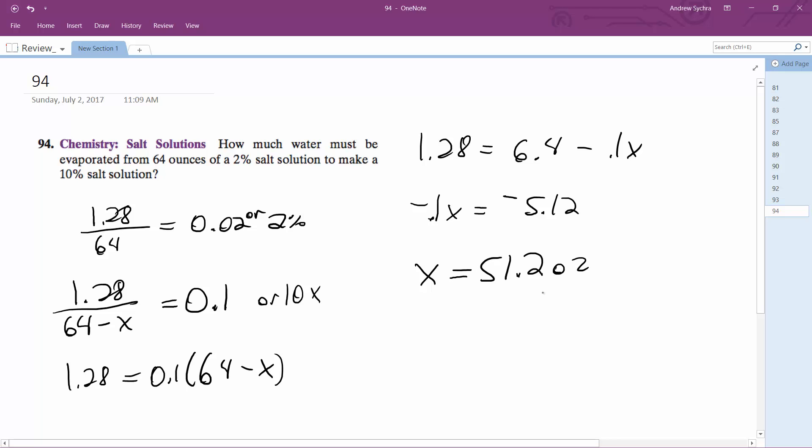Is that what I need to evaporate or take away? 64 minus 51.2? Yeah.